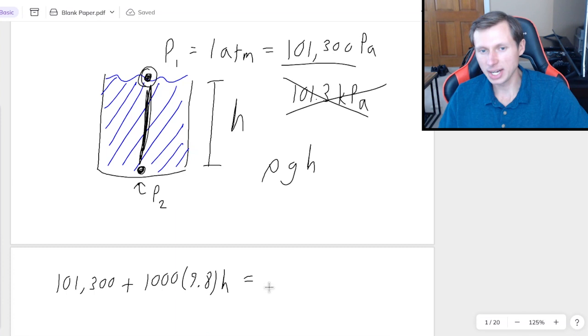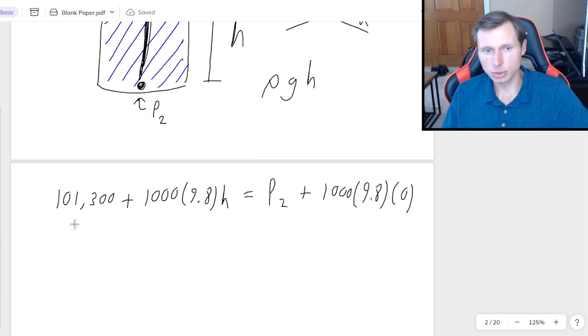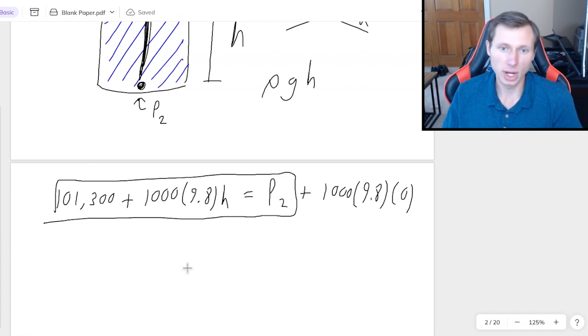But anyways, in terms of how I'd use Bernoulli's principle to solve this, P₁, 101,300, plus ρgh₁, which is 1,000 for water, g is 9.8, and the height here is the full height h, whatever that ends up being, because we're measuring it from the bottom now. And the ½ρv² is going to be 0, because nothing's flowing, nothing's moving in this container. On the right side, I have P₂ plus its gravitational potential pressure, which would be ρ, 1,000, g, 9.8, times its height at the bottom, which of course would be 0. And so basically, this ends up being the answer, and if I give you a height, you can actually calculate for pressure 2.